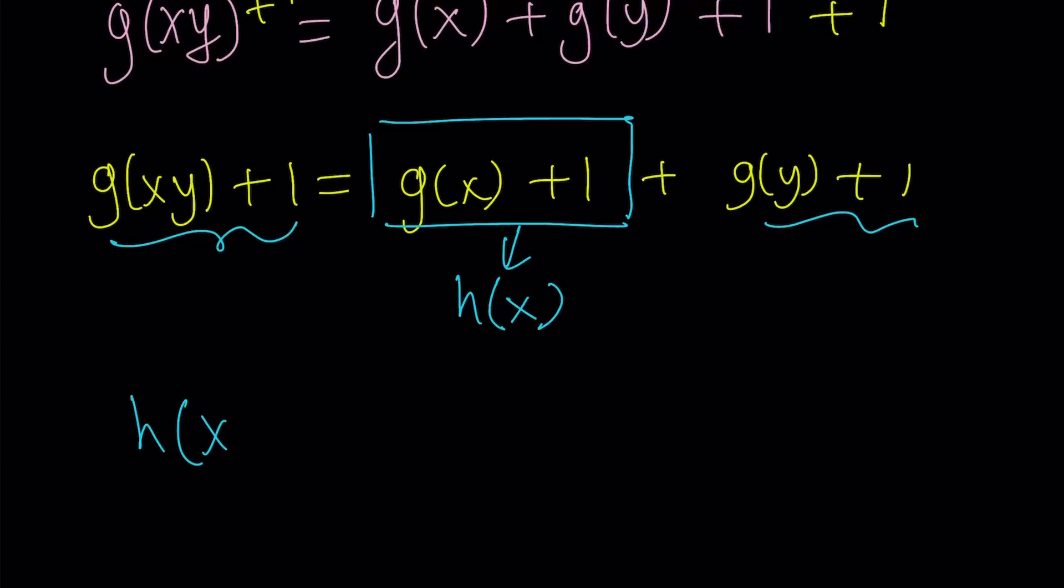Because if h of x is g of x plus 1, then h of xy would be g of xy plus 1. Basically you're replacing x with xy. Okay? You have that kind of freedom with functions if they're well defined on a certain domain. So this is gonna be h of x plus h of y. And guess what? This is Cauchy's functional equation. Isn't that awesome? Yay! Great.